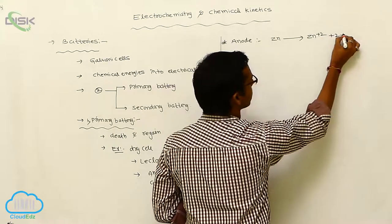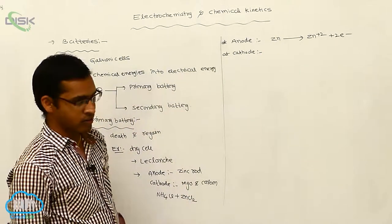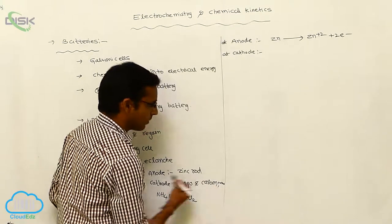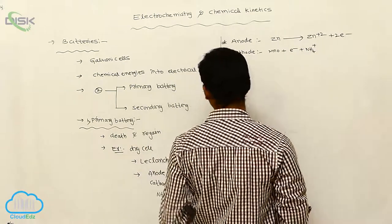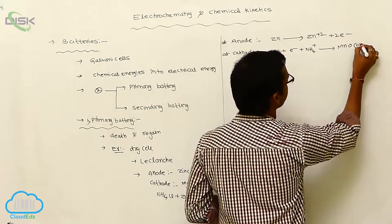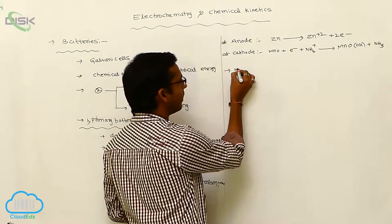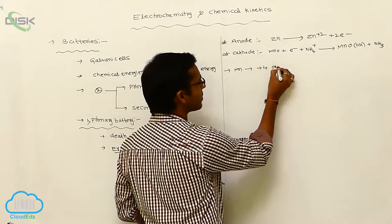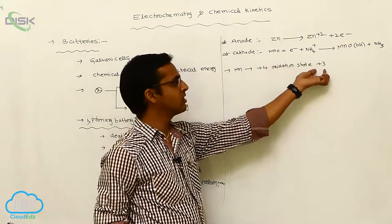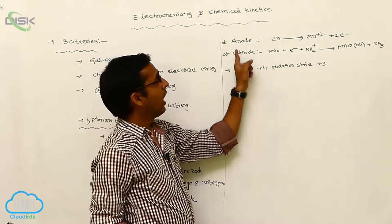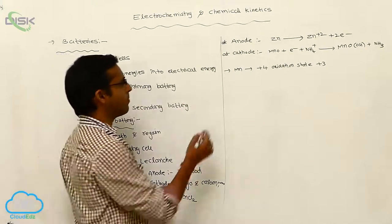At the anode, zinc undergoes oxidation — loss of electrons — giving Zn²⁺ plus 2 electrons. At the cathode, manganese oxide reacts with electrons and NH₄⁺ (from ammonium chloride) to produce manganese oxide with NH₃. During this process, manganese is reduced from a +4 oxidation state to a +3 oxidation state. Reduction occurs at the cathode and oxidation at the anode.